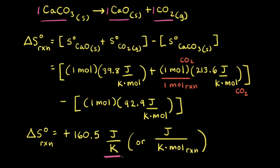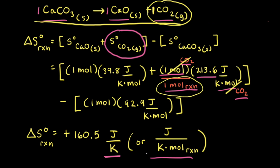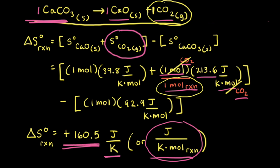The units can be expressed as joules per Kelvin or as joules per Kelvin per mole of reaction. For example, carbon dioxide is 213.6 J/K per one mole of CO₂, and with a coefficient of one there is one mole of CO₂ per one mole of reaction, so the moles of CO₂ cancel, leaving joules per Kelvin per mole of reaction. This simply means that for the decomposition of one mole of calcium carbonate, the entropy change is +160.5 J/K. For two moles of calcium carbonate, the change in entropy would be twice that value.